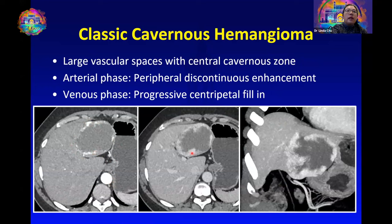On the venous phase images we expect to see progressive centripetal fill-in, and depending on the size of the lesion it may not completely fill on the venous or even the delayed phase images.